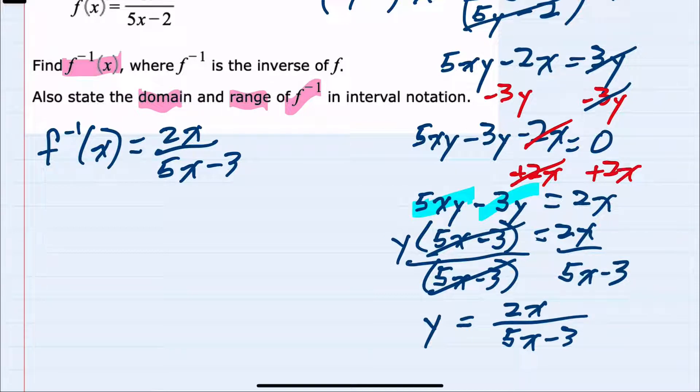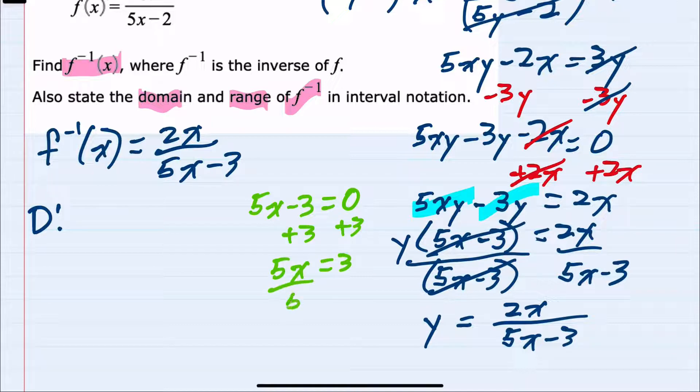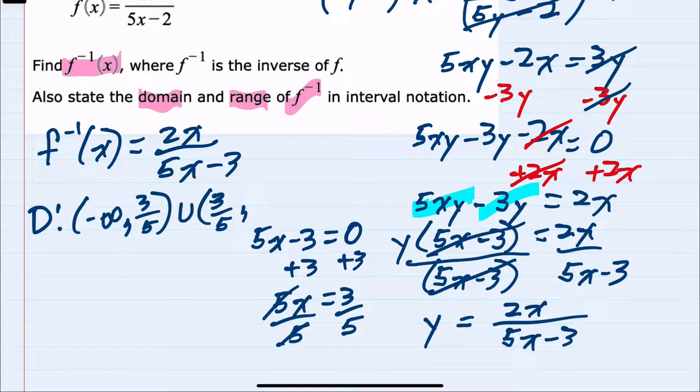And to find the domain of our inverse function here, we can see that we're limited by the fact that the denominator cannot be equal to 0. So we would just want to find out where the denominator does equal 0. Our inverse function has a denominator of 5x minus 3. If I set that equal to 0, I could add the 3 over to solve for x and then divide by 5. And I see that when x equals 3 fifths, the denominator will be 0. So I want to exclude 3 fifths from the domain. So this would be negative infinity to 3 fifths, not including 3 fifths, union with 3 fifths to positive infinity.